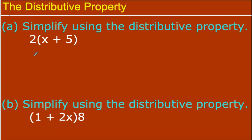So how do we use it? Here's an example. I have 2 being multiplied to the quantity X plus 5. That quantity is an expression with addition, so that 2 has to get multiplied to the X and to the 5. You see me using those arrows — I use them every time. There's no reason not to; it helps me remember I've got to make sure I multiply that 2 to everything.